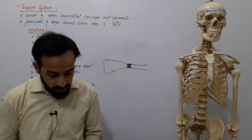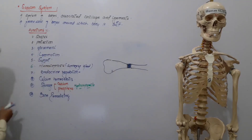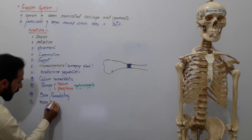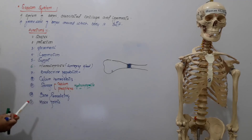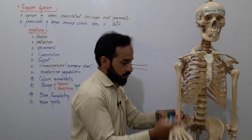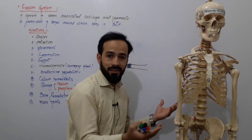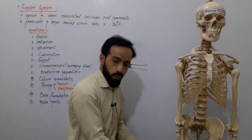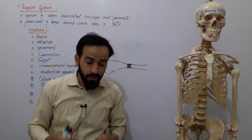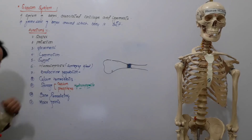Another important function is that the skeletal system makes joints. Without joints, we would not be able to move. The bones and the skeletal system form these joints in the body. We have different types of joints in the body, and their functions are very important.